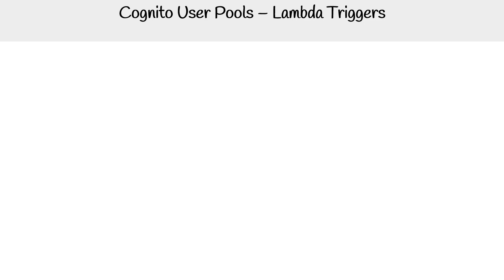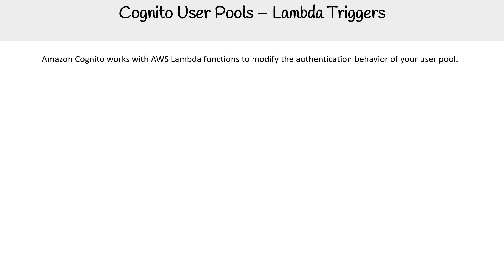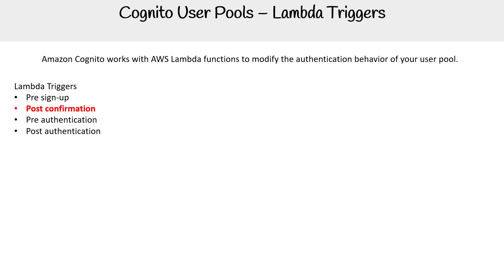Let us take a look at Lambda triggers. Amazon Cognito works with AWS Lambda functions to modify the authentication behavior of your user pool. It has the following triggers: pre sign-up, post confirmation, pre authentication, post authentication, challenge Lambda, pre token generation, migrate user, and custom message.